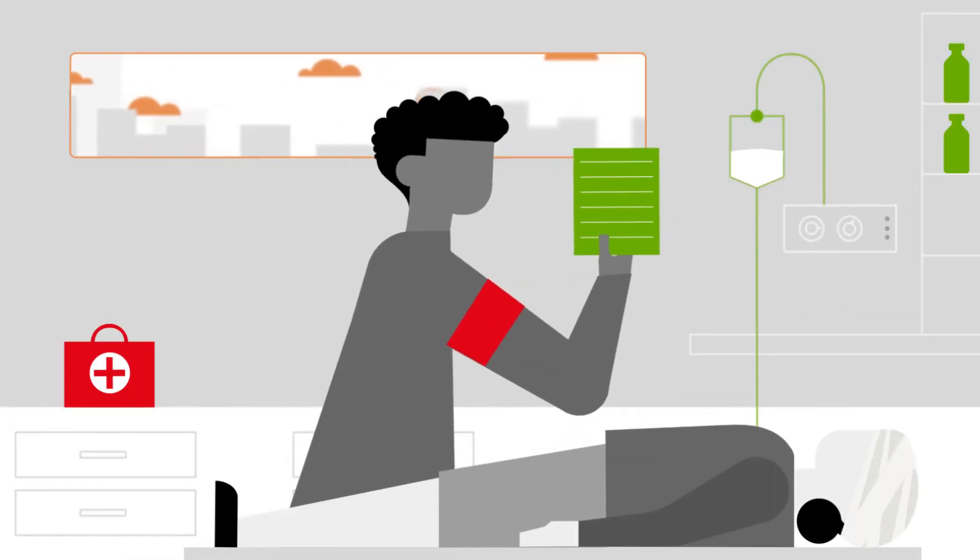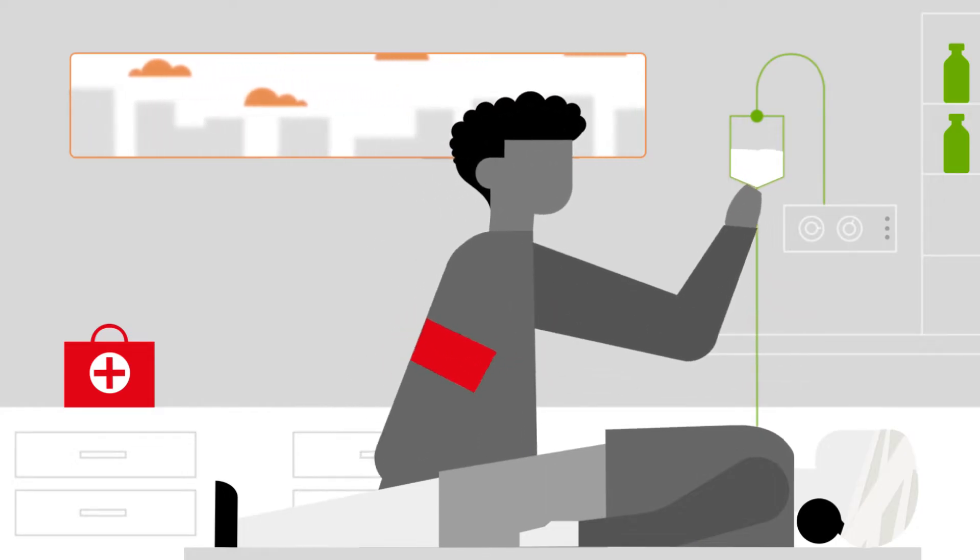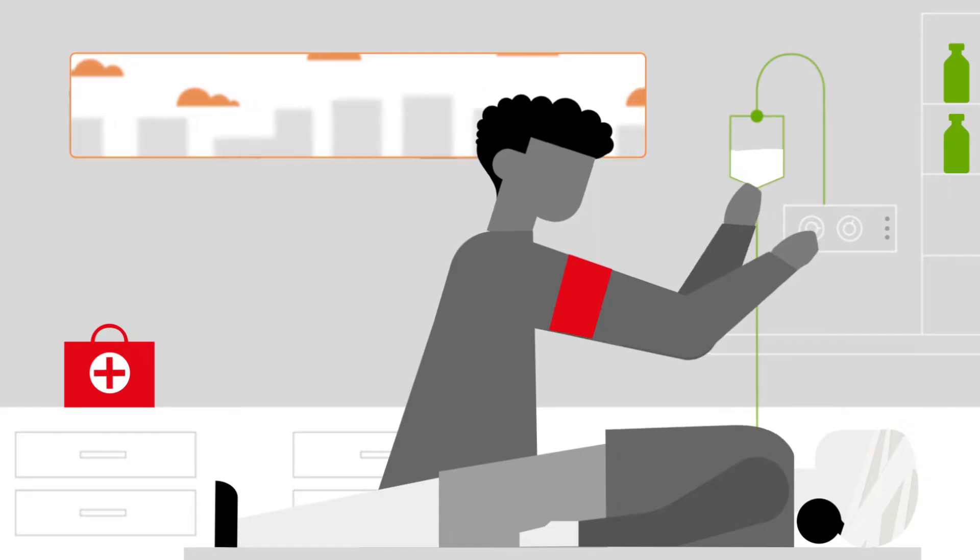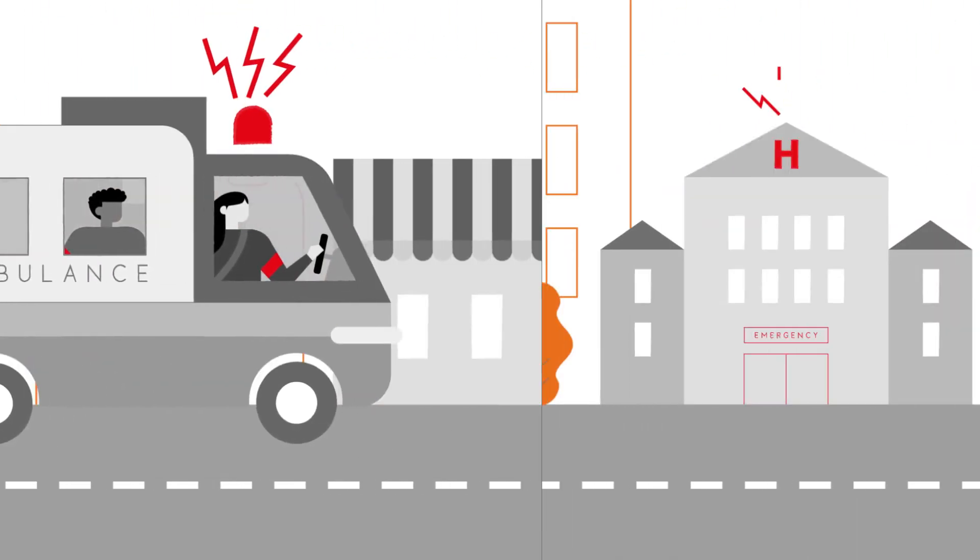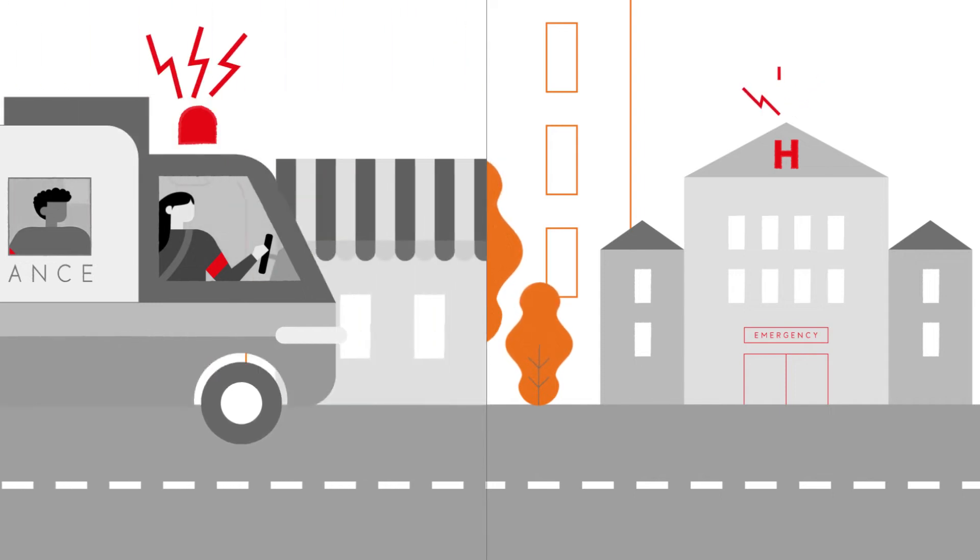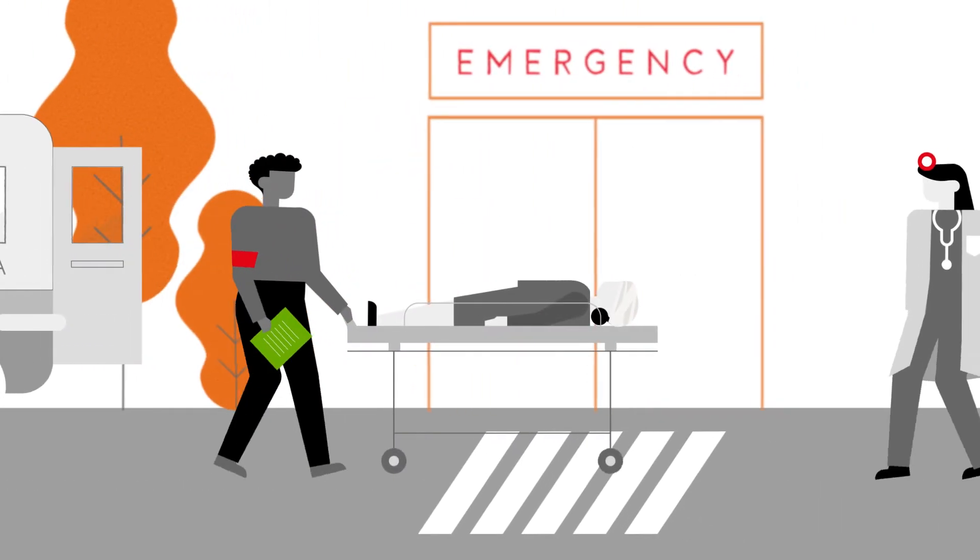Ambulances always need at least two personnel: one to monitor and manage the patient during transport and another to drive. Ambulance personnel should be able to communicate with the hospital prior to arrival if needed.